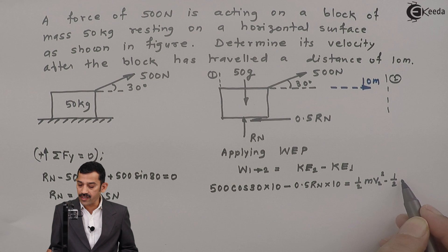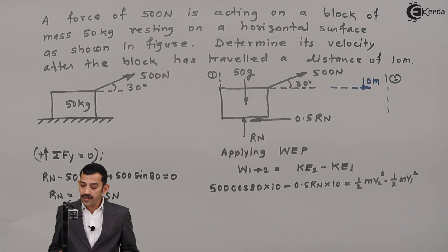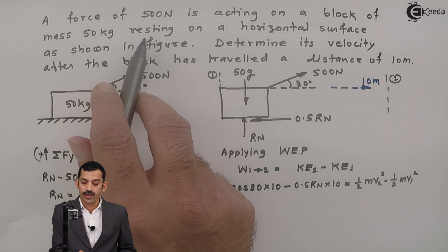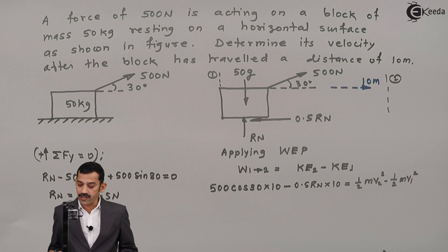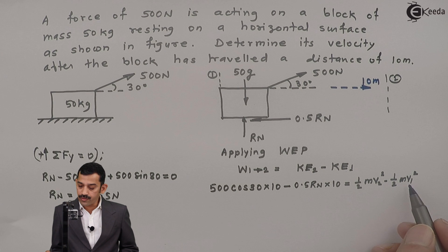Initial kinetic energy is half M V1 square. Now this initial kinetic energy is given in problem: 50 kg block resting on horizontal surface. That means V1 is 0. As V1 is 0, we will substitute V1 as 0. Unknown term is only V2.